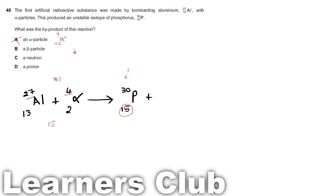An alpha particle adds 4 to nuclear number and 2 to proton number — incorrect. Beta negative subtracts from the proton number making it 14 — incorrect. A neutron adds 1 to the nuclear number while leaving the proton number unchanged, which matches exactly. Therefore the byproduct is a neutron, answer option C.